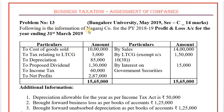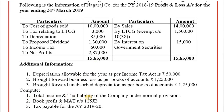The following is the information of Nagraj Company. For the previous year 2018-19, the profit and loss account for the year ending 31st March 2019 is given. We need to calculate: total income and tax liability of the company under normal provisions, book profit, and finally tax payable for the assessment year 2019-20.